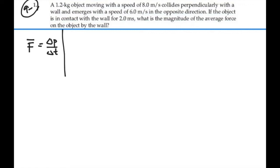We have an object hitting the wall. So here's our wall. And the initial speed is 8 meters per second. And then it's going to rebound off the wall. And it'll have a final speed of 6 meters per second. But it's going in the opposite direction. So if we're defining a velocity here, we would say the final velocity is actually a negative 6 meters per second.